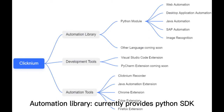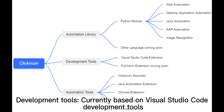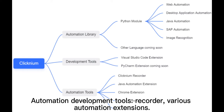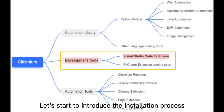The automation library currently provides a Python SDK. Development tools are currently based on Visual Studio Code, including automation development tools, a recorder, and various automation extensions.